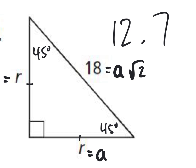Who said divide? Good one. We divide by the square root of 2. Now in your calculators, plug in 18 divided by the square root of 2. German, you're going to be my calculator person for today. And click enter. 12.7? Yes. A equals 12.7.